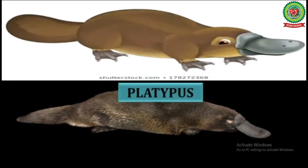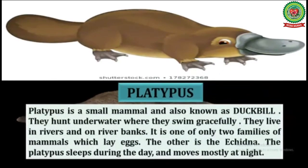Next is platypus. The platypus is a small mammal also known as duckbill. They hunt underwater where they swim gracefully. They live in rivers or on river banks. It is one of only two families of mammals which lay eggs — the other is the echidna. The platypus sleeps during the day and moves mostly at night.